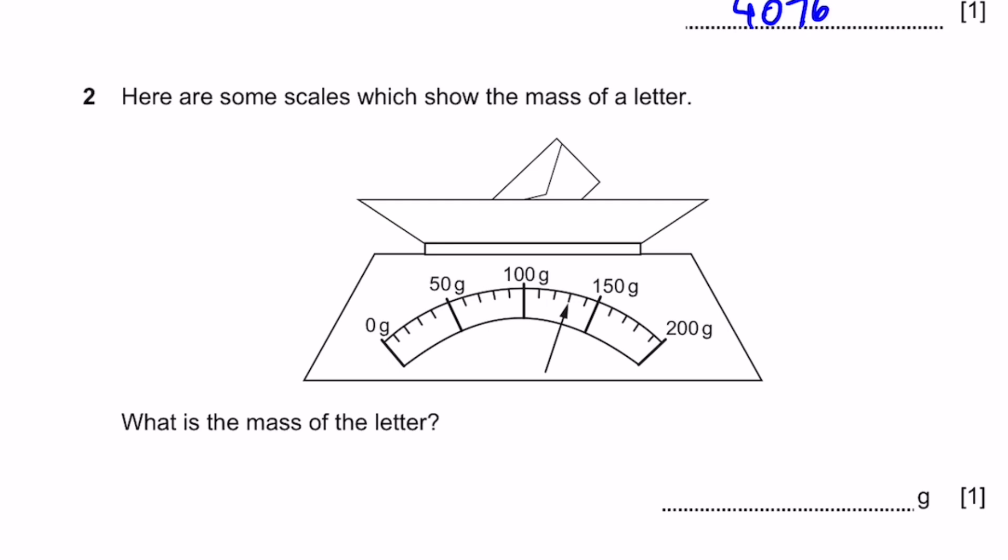Question 2. Here are some scales which show the mass of a letter. What is the mass of the letter? You can see that 0 to 50 grams is 5 divisions, so the length between 1 division is 10 grams. You have 100 grams here and then 1, 2, 3 extra small divisions. So it would be 100 plus 3 into 10, that would be 130 grams. That's the answer.